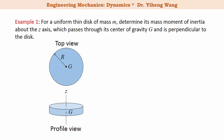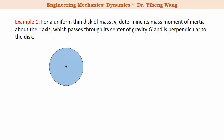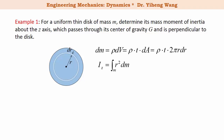Let's look at this example. For a uniform thin disk of mass m, we need to determine its mass moment of inertia about the z axis, which passes through its center of gravity G and is perpendicular to the disk. We pick our differential element to be a ring located at radius r with a width of dr. Its mass dm equals density rho times its volume dV, where the volume equals area dA times the thickness t, and the area of the ring equals its circumference 2πr times dr. The mass moment of inertia about the z axis is the integration of r squared dm.